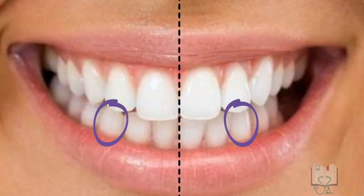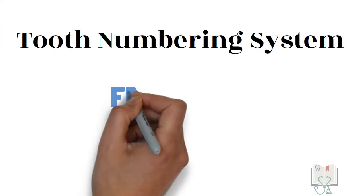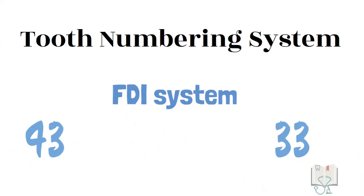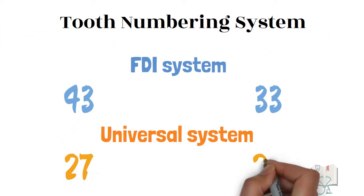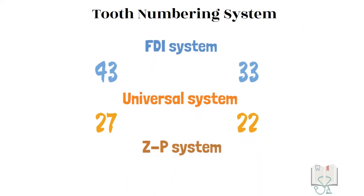Permanent mandibular canine is a third tooth from the midline. Its tooth number in FDI system is 4-3 and 3-3. In universal system, it is 27 and 22 and in sigmondi palmer system, it is 3 with appropriate cord and brackets.